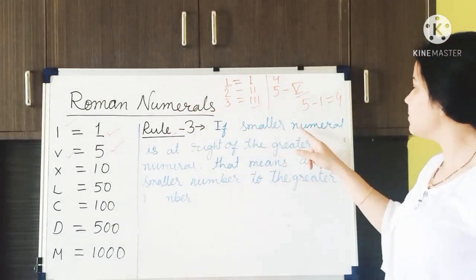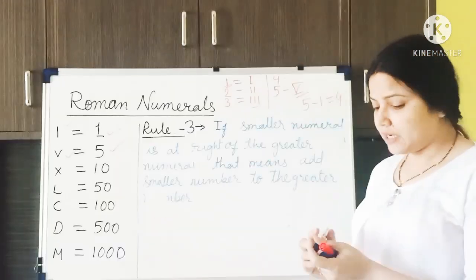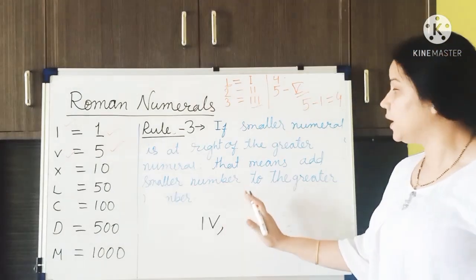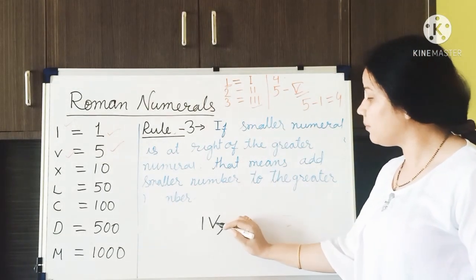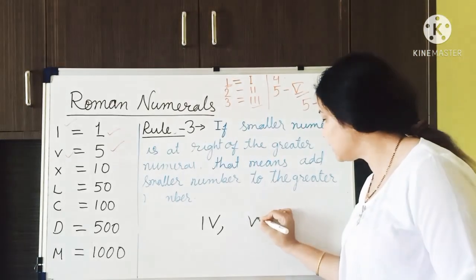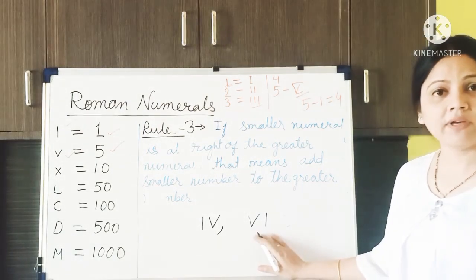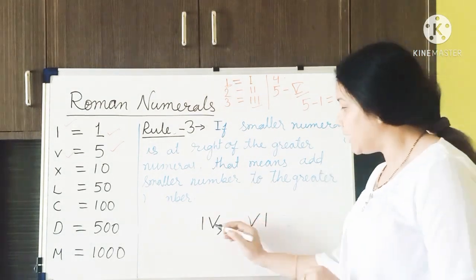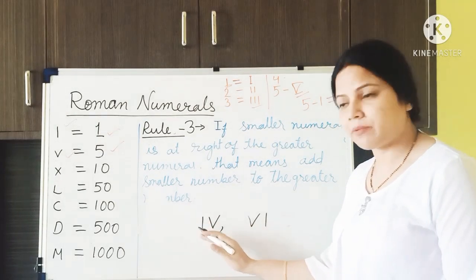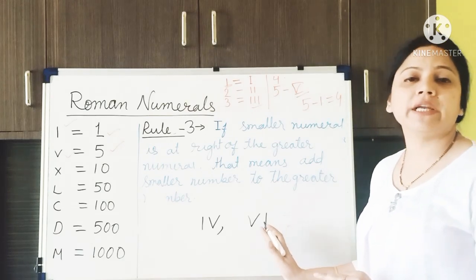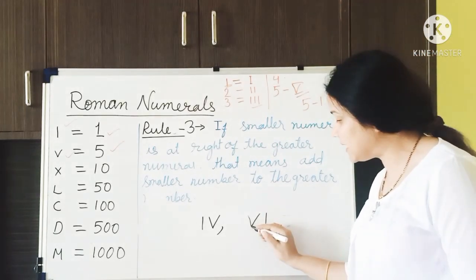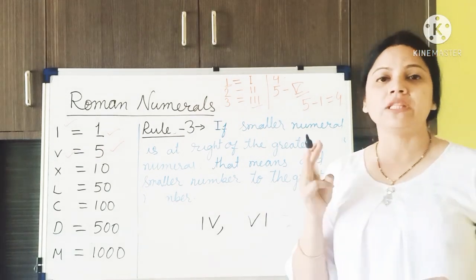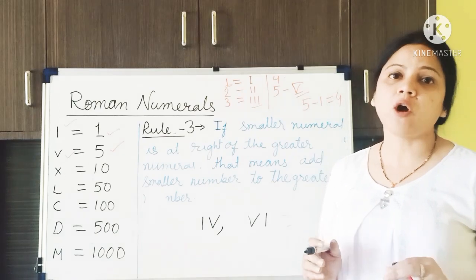Rule number 3: if a smaller numeral is placed at the right of a greater numeral, add the values. So if we put a smaller symbol to the right of the greater symbol, we add them. For example, VI means 5 plus 1 equals 6. These are the 3 rules, and by following them we can form all Roman numerals.